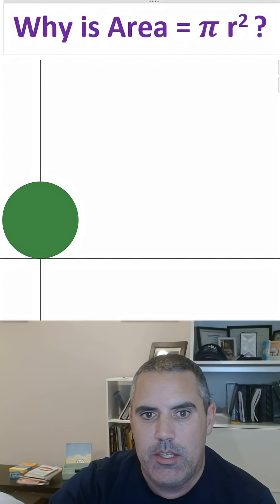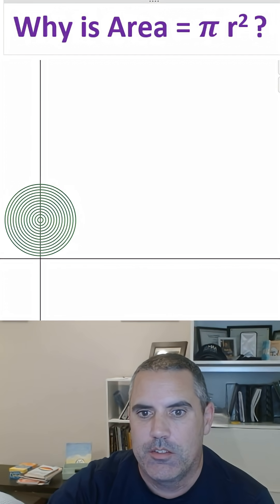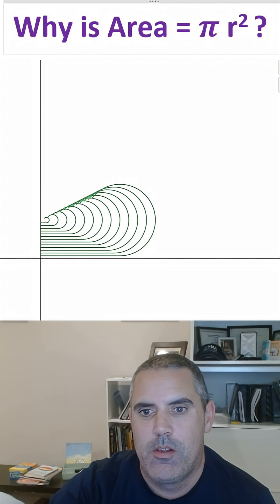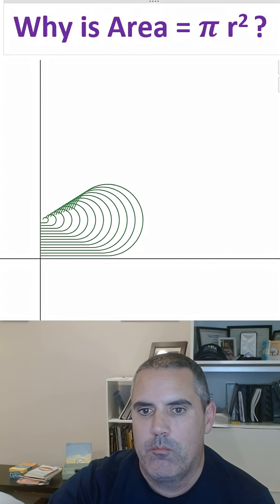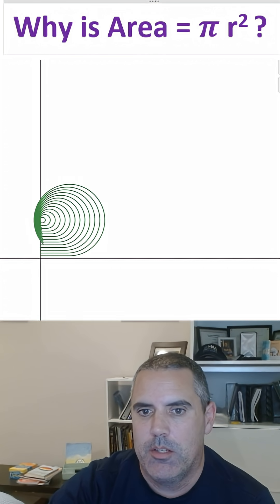So imagine we break this up into a bunch of little subdivisions here and we unroll them. So here we go. Let's unroll them to the right. Now when I do that, think about where everything came from. Think about what it is to the middle of that circle.